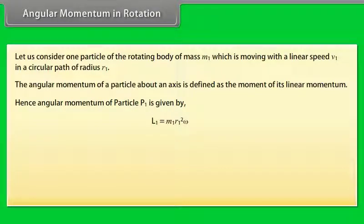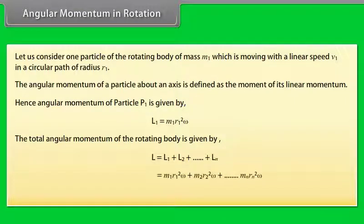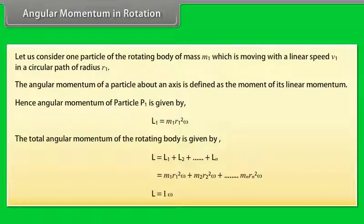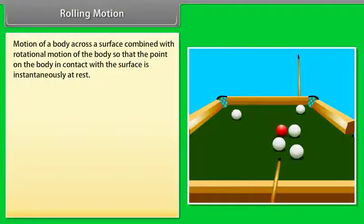For angular momentum in rotation: consider one particle of the rotating body of mass M1 moving with linear speed V1 in a circular path of radius R1. The angular momentum of a particle about an axis is the moment of its linear momentum. Angular momentum of particle P1 is L1 = M1·R1²·ω. The total angular momentum is L = L1 + L2 + ... + Ln = M1·R1²·ω + M2·R2²·ω + ... + Mn·Rn²·ω = I·ω.